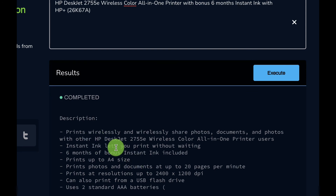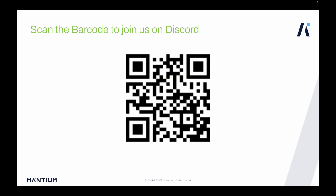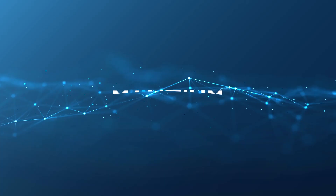As you can see, we get the description 'print wirelessly' and you can also increase the response length to get more product description. That's the end of this tutorial on how to build a product description generator for your Amazon store or e-commerce store using the Mantium no-code platform. Thank you for watching — if you need any help or have questions, scan the barcode to join us on Discord and we'll be happy to help.